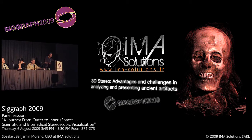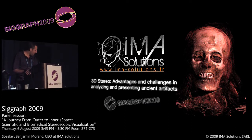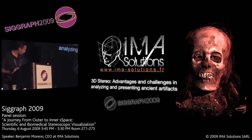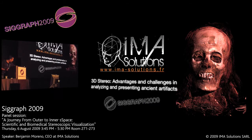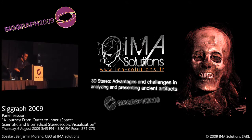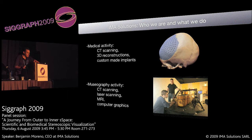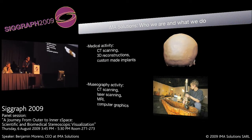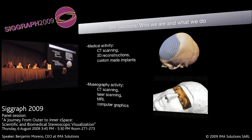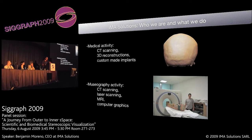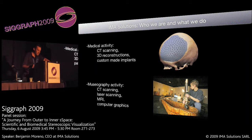I will start showing you ancient dead bodies, and Richard Brehman will continue with the living ones. We will talk about advantages and problems in analyzing and presenting ancient artifacts. At AMI Solutions, we work in two main domains: museography, using CT scanning, MRI, micro CT, and computer graphics; and also medical activity, using the same core technology — CT scanning and 3D reconstructions — to provide custom-made patient implants in maxillofacial and cranial surgery.